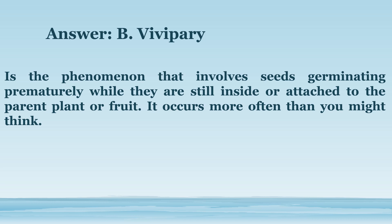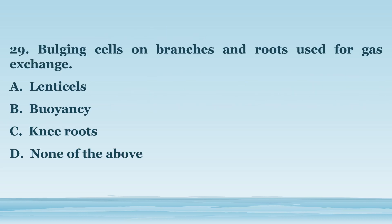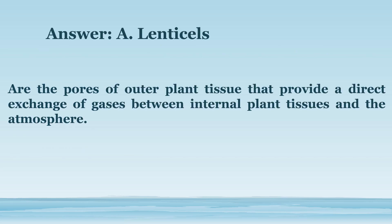It occurs more often than you might think. Number 29. Bulging cells on branches and roots used for gas exchange. A. Lenticel cells. B. Buoyancy. C. Knee roots. D. None of the above. The answer is letter A. Lenticel cells. Are the pores of outer plant tissue that provide a direct exchange of gases between internal plant tissues and the atmosphere.